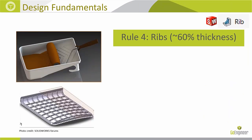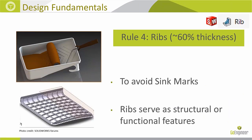The same principle applies to ribs. Ribs are often structural features, but if you don't choose the right thickness you can also get sink marks. You may have seen plastic seats with vertical or horizontal lines from the ribs underneath — that's because the rib thickness wasn't right for that part or cooling time.